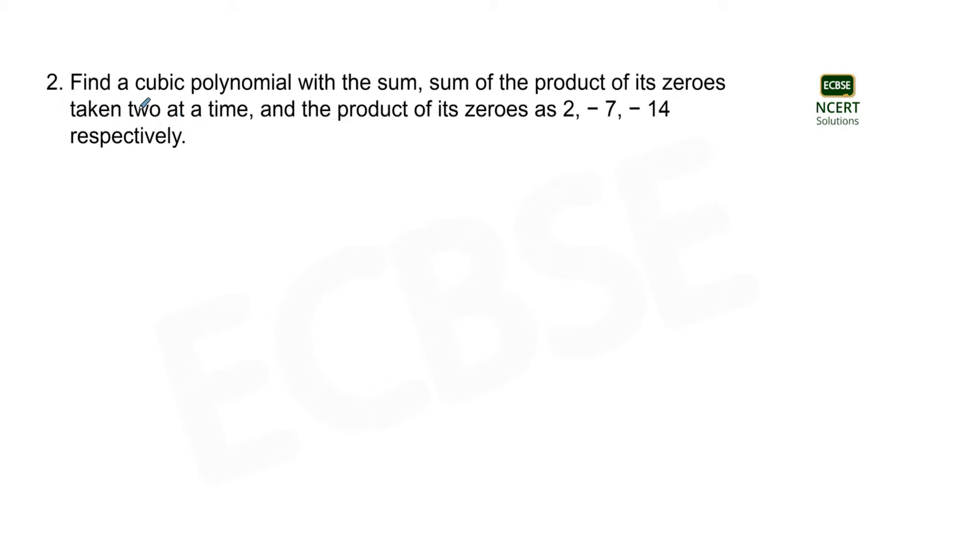The question is find a cubic polynomial with the sum, sum of the product of its zeros taken two at a time, and the product of its zeros as 2, minus 7, minus 14 respectively. So we need to find the cubic polynomial from the data provided in the question.